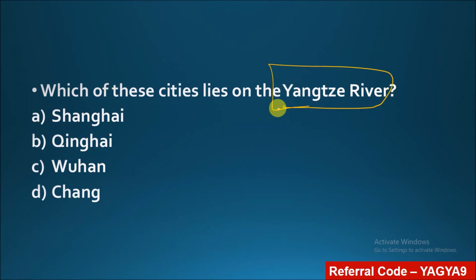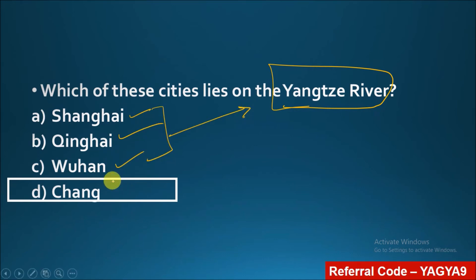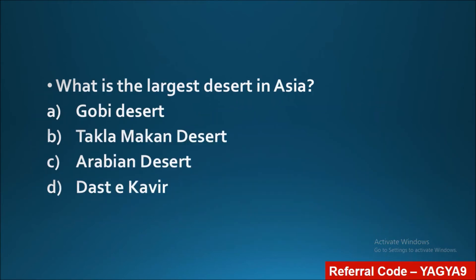Next question: which of these cities lies on the Yangtze River? Options: Shanghai, Chengdu, Wuhan, Chang. The correct answer is Shanghai. Wuhan and Nanjing are also on the bank of the Yangtze River — Wuhan is where the coronavirus outbreak occurred. But Chang is not on the bank of the Yangtze. Chongqing is also on the Yangtze.